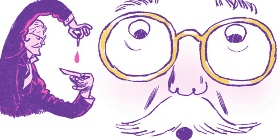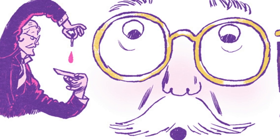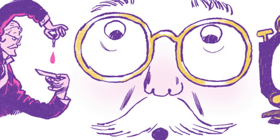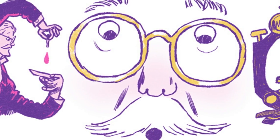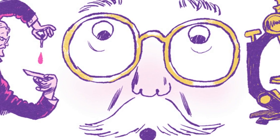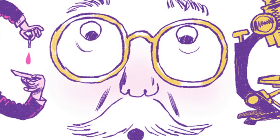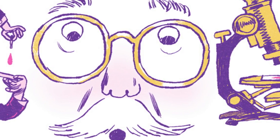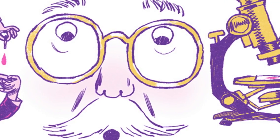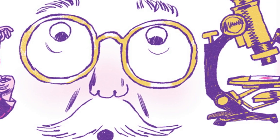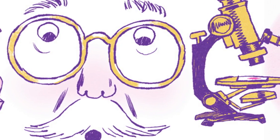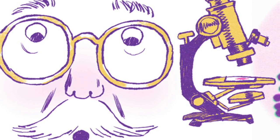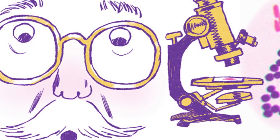Hans Christian Graham was born in Copenhagen on this day in 1853. After earning his M.D. from the University of Copenhagen in 1878, Graham traveled through Europe studying bacteriology and pharmacology, while working in the lab of German microbiologists.